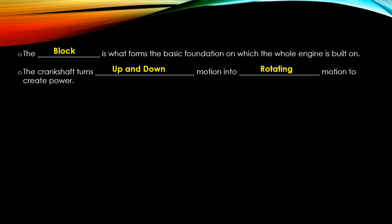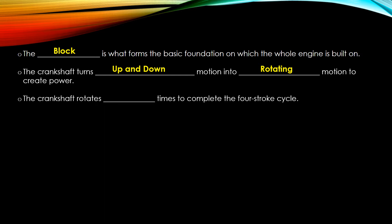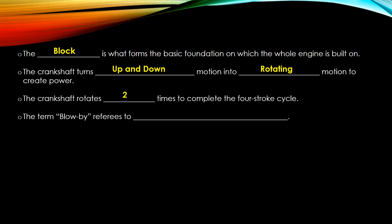The crankshaft turns up-and-down motion, or reciprocating motion, into rotating motion. In the four-stroke cycle, remember you have two up-strokes and two down-strokes, so the crankshaft is going to rotate two times.